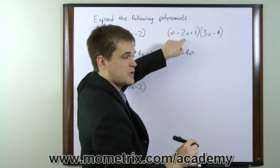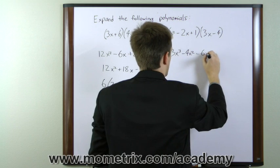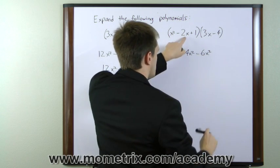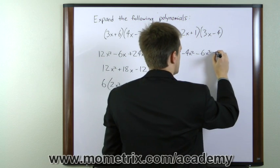Moving to the second term here, minus 2x times 3x gives us minus 6x squared. Minus 2x times minus 4 equals plus 8x.